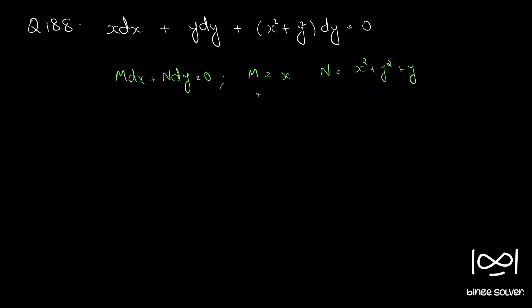So, del m by del y becomes, this is a constant, so 0. And del n by del x is equal to 2x. So, this is not equal, so this is not an exact equation. We will use the method of rearrangement and finding the solution and integrating it directly.